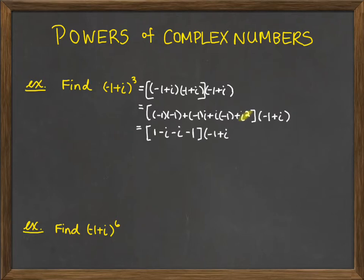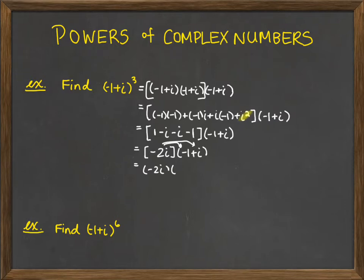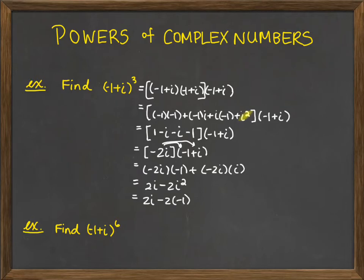Continuing to clean up the terms inside the bracket: the 1 and the minus 1 cancel, leaving negative 2i times negative 1 plus i. Distributing gives negative 2i times negative 1 plus negative 2i times i, which yields positive 2i minus 2i squared. Since i squared equals negative 1, this gives us 2 plus 2i.